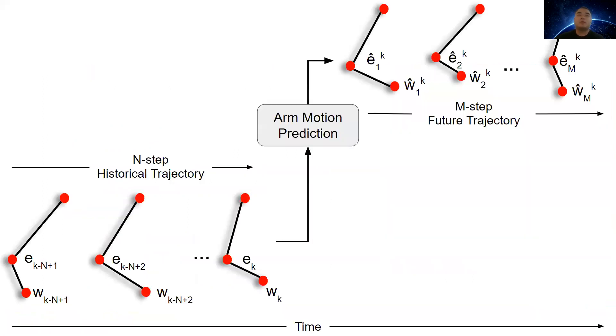In this work, we mainly focus on human arm motion prediction, because the arms are the major parts that are involved in the collaboration.